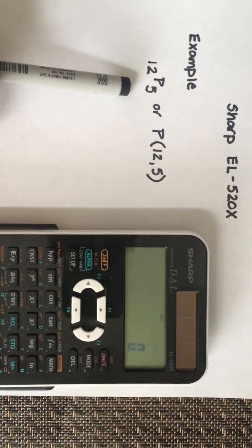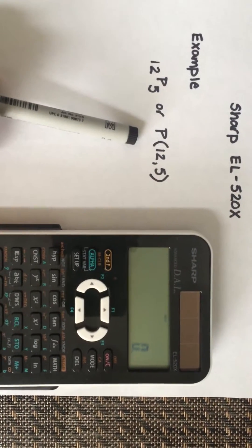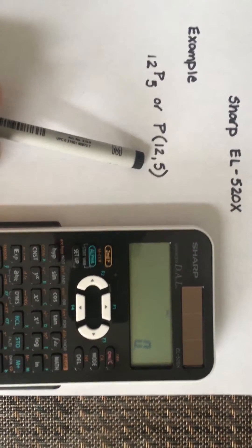The example I'm going to show you is 12 permute 5, or it's also written like this with the P on the outside, 12 comma 5.